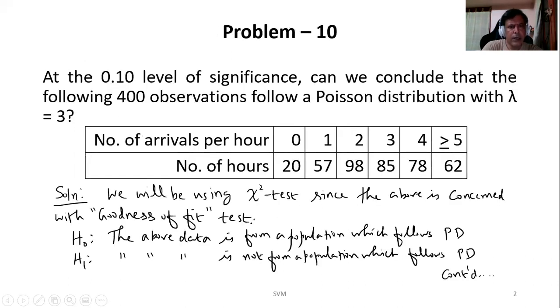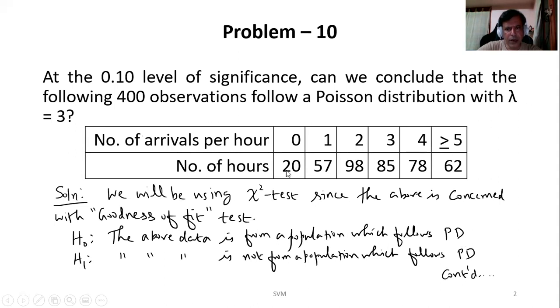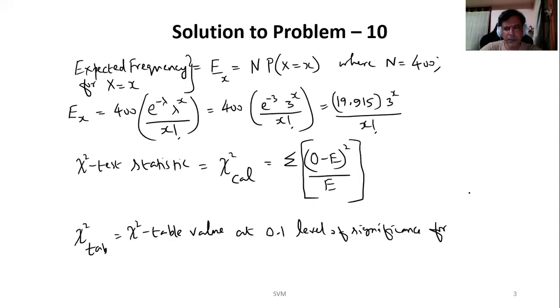And then we also have chi square tab, which is chi square table value at 0.1 level of significance. We can get that value from the table as 9.236.